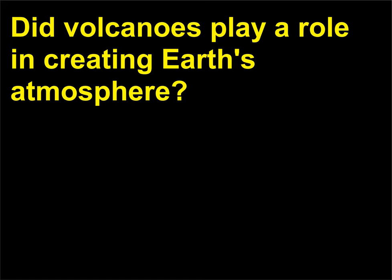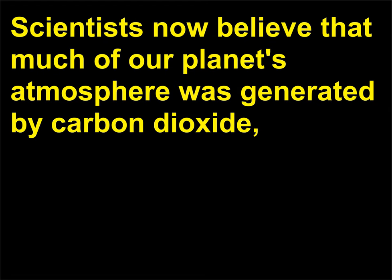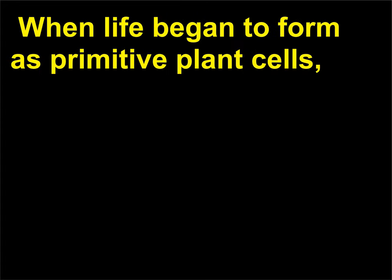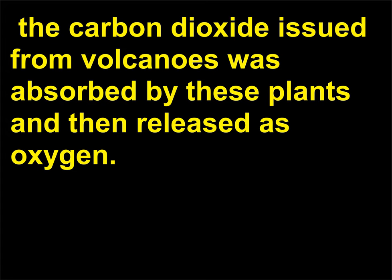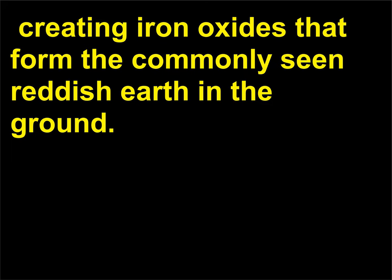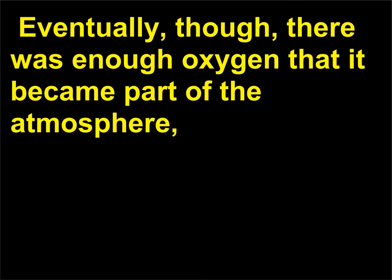Did volcanoes play a role in creating Earth's atmosphere? Scientists now believe that much of our planet's atmosphere was generated by carbon dioxide, water vapor, nitrogen, argon, and methane spewing out of volcanoes. When life began to form as primitive plant cells, the carbon dioxide from volcanoes was absorbed by these plants and released as oxygen. At first, the oxygen reacted with iron and other metals in the Earth's crust, creating iron oxides that form the commonly seen reddish Earth in the ground. Eventually, there was enough oxygen that it became part of the atmosphere, and breathable air was created.